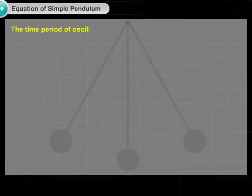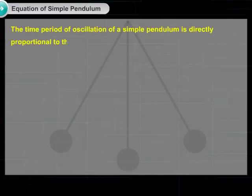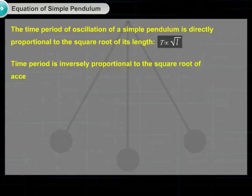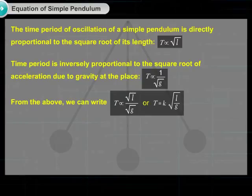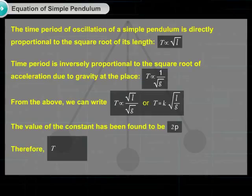The time period of oscillation of a simple pendulum is directly proportional to the square root of its length, and inversely proportional to the square root of acceleration due to gravity at the place. From the above, we can write: time period is directly proportional to the square root of length divided by acceleration due to gravity. The value of the constant has been found to be 2π. Therefore, time period T = 2π √(L/g).